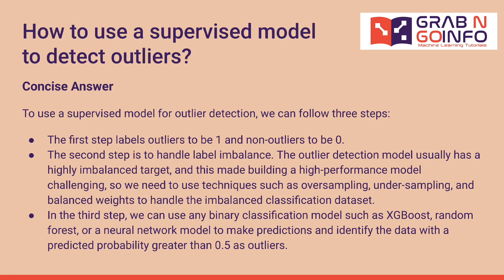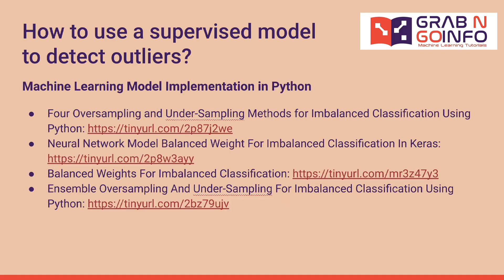In the third step, we can use any binary classification model such as XGBoost, Random Forest, or a neural network to make predictions, and identify data with a predicted probability greater than 0.5 as outliers. Recommended tutorials include oversampling and undersampling methods for imbalanced classification, neural network balanced weights for imbalanced classification in Keras, and ensemble oversampling and undersampling for imbalanced classification using Python.